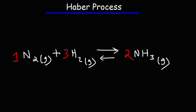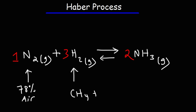Let's talk about the Haber process. The Haber process is the industrial production of ammonia from nitrogen and hydrogen gas. Nitrogen gas can easily be obtained from air — about 78% of air is composed of nitrogen gas. Hydrogen gas can be made from natural gas or methane. When methane reacts with steam, it can produce carbon monoxide and hydrogen gas.